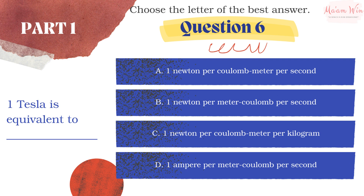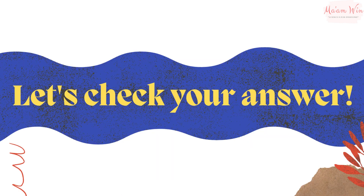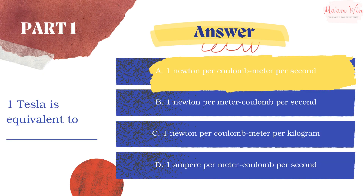Question number six: one tesla is equivalent to — A: one newton per kilogram per second; B: one newton per kilogram per second; C: one newton per kilogram per kilogram; D: one ampere per meter column per second. Let's check the answer — the right answer is letter A: one newton per kilogram per second.